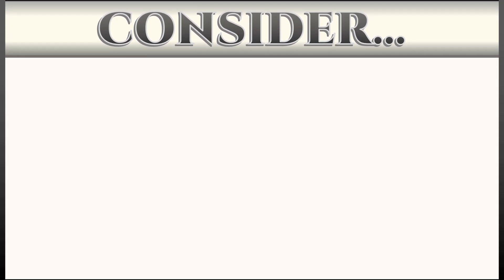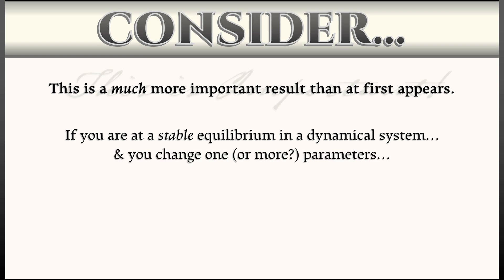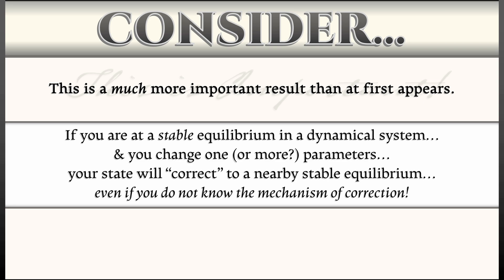Consider what we have done. This is really a much more important result than at first appears. If you're at a stable equilibrium in a dynamical system and you change one or maybe more parameters, your state is going to automatically correct to a nearby stable equilibrium, even if you don't know the mechanism by which that correction is going to occur. I wonder what we could do with that. Could we say, we've got the environment, roughly a stable equilibrium. Let's up the CO₂ output and see what equilibrium we move to.